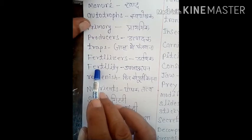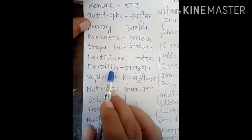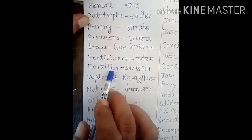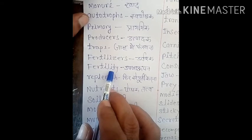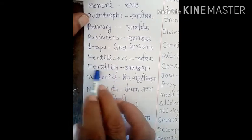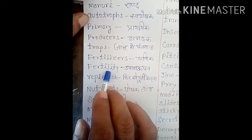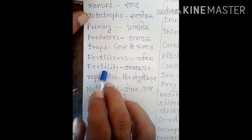Next word is 'fertility', F-E-R-T-I-L-I-T-Y. Fertility means 'upjaupan'. Jo soil hai, agar uski fertility kam ho jaati hai, to jo farmers hain woh us soil ke andar manure ya fertilizers mix karte hain.